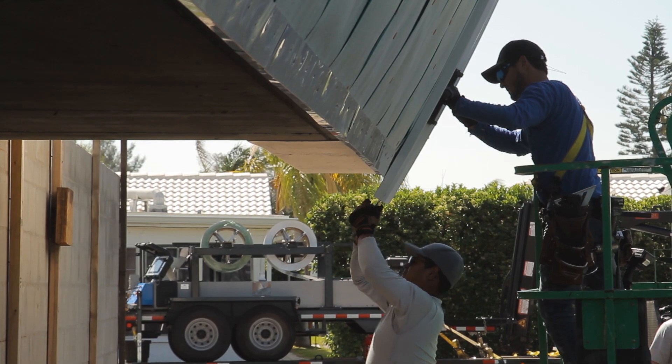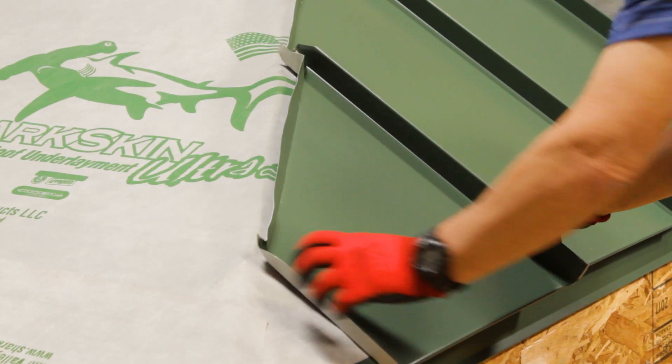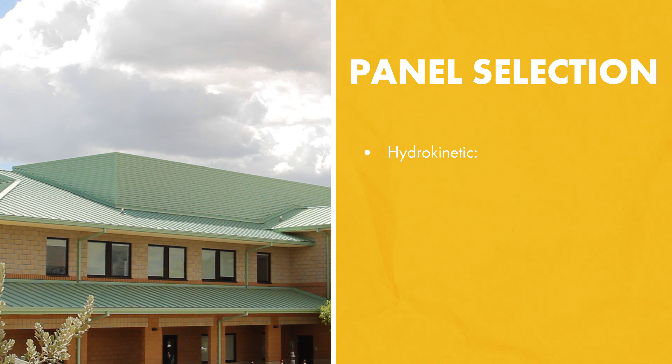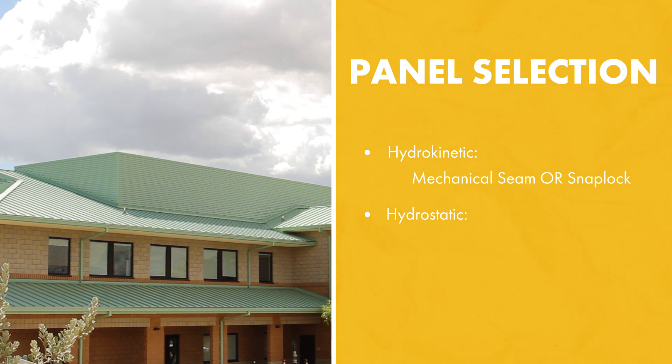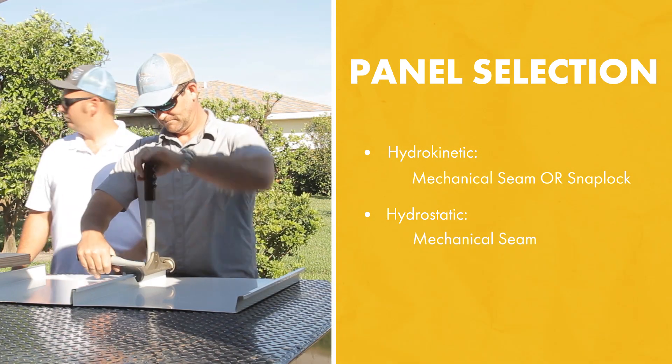The two main panels that we work with are mechanically seamed panels and snap lock panels. Mechanically seamed panels have a 180-degree seam, while snap lock panels do just what they say — they snap lock together. Depending on which type of roof system you have, either hydrostatic or hydrokinetic, it's going to determine which panel profiles are available. In a hydrokinetic system, either one would work — mechanical or snap lock. In a hydrostatic system, you're going to want to go with a mechanically seamed panel.